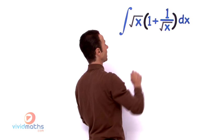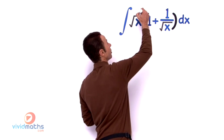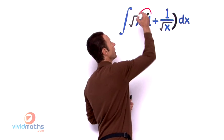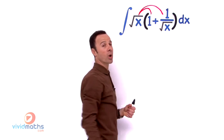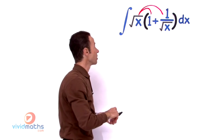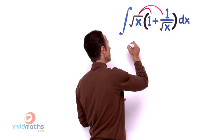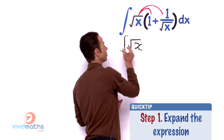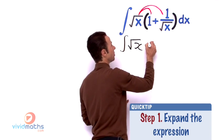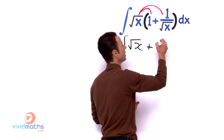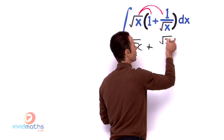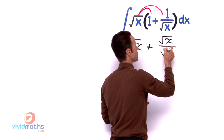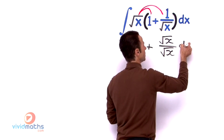Let's start off here by expanding. We are going to multiply the square root of x times the 1 and the square root of x times the 1 over the root x. So the first part will be the integral of the square root of x plus multiplying that will be the square root of x over the square root of x dx.